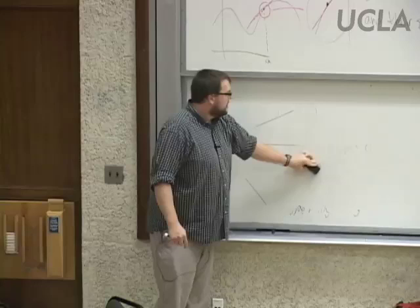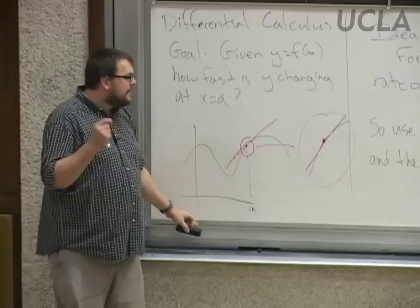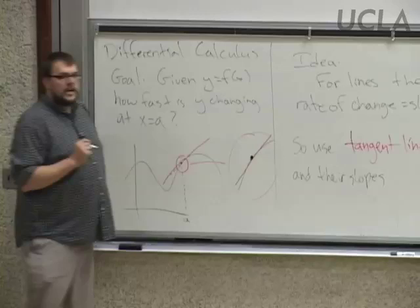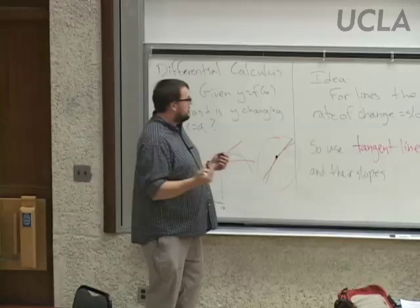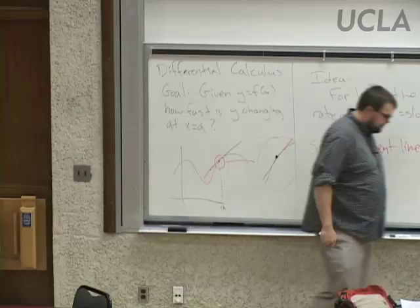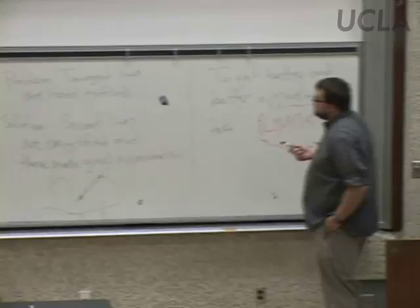So we know we want to find tangent lines, and we know we want to find the slopes of those tangent lines. We have a clear goal. But the problem is that tangent lines are hard to find. We know one thing for sure: they touch the function at the point we're interested in. But tangent lines need two pieces of information — either two points or a point and a slope. We don't know the slope, so we just don't have enough information to find tangent lines.